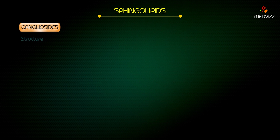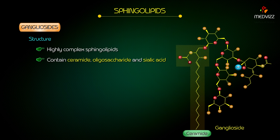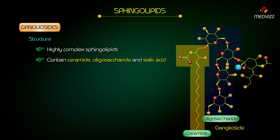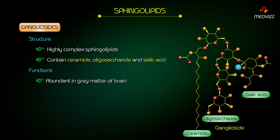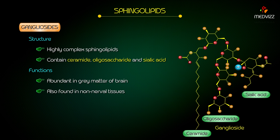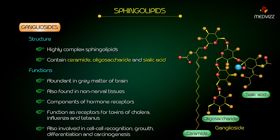Gangliosides — structure: they are highly complex sphingolipids. They contain ceramide, oligosaccharide, and sialic acid. Functions: they are abundant in gray matter of the brain and are also found in non-nervous tissue. They are components of hormone receptors. They also function as receptors for toxins of cholera, influenza, and tetanus. They are involved in cell-cell recognition, growth, differentiation, and carcinogenesis.